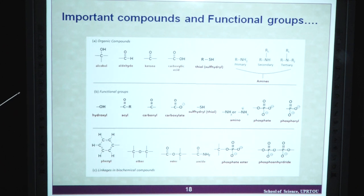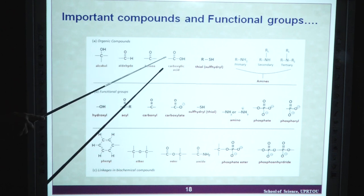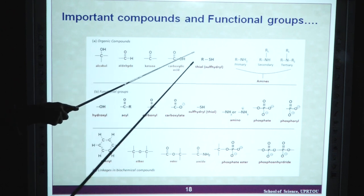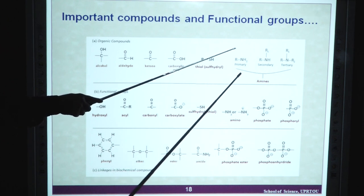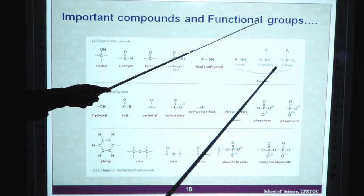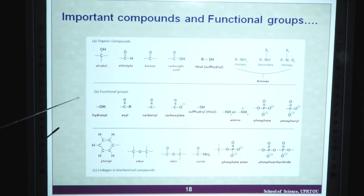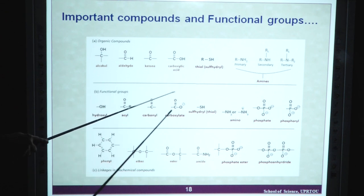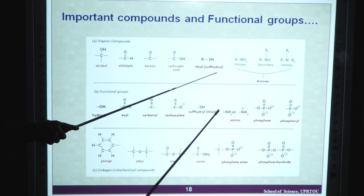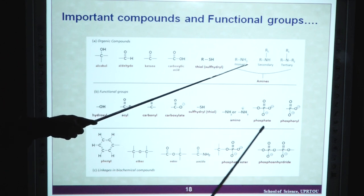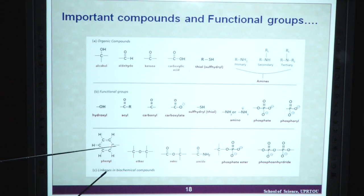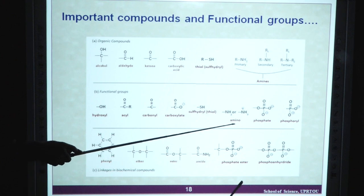Important compounds and functional groups: we have some organic compounds like alcohols, aldehydes, ketones, carboxylic acids, thiol groups and amines — primary amines, secondary amines and tertiary amines. We have some functional groups in organic compounds: hydroxyl group, acyl group, carbonyl, carboxylate, sulfhydryl, amino group present in proteins, phosphate and phosphoryl group. We also have phenyl, ether, ester, amide, phosphate ester and phosphoanhydride.